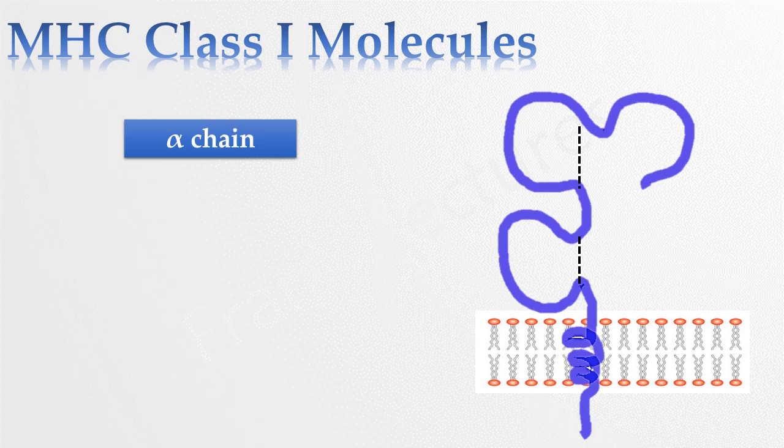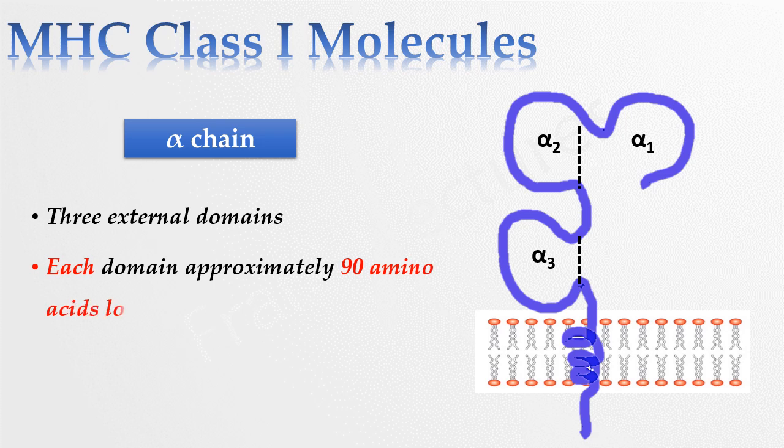This alpha chain is folded into three external domains which are termed as alpha 1, alpha 2, and alpha 3. Each of these is approximately 90 amino acids long.